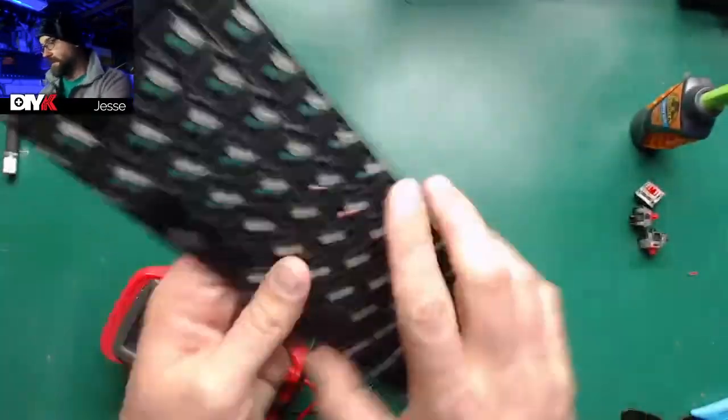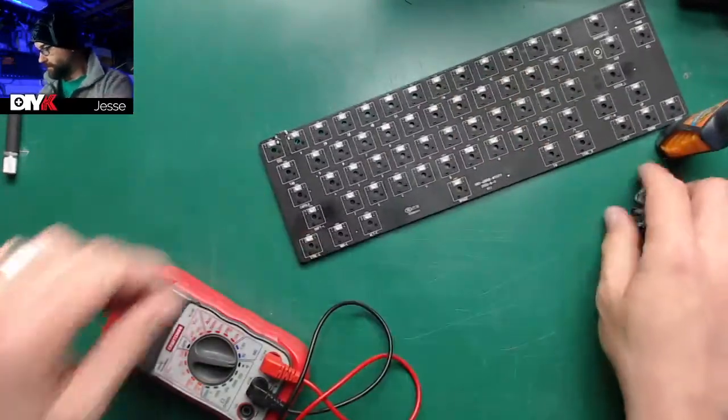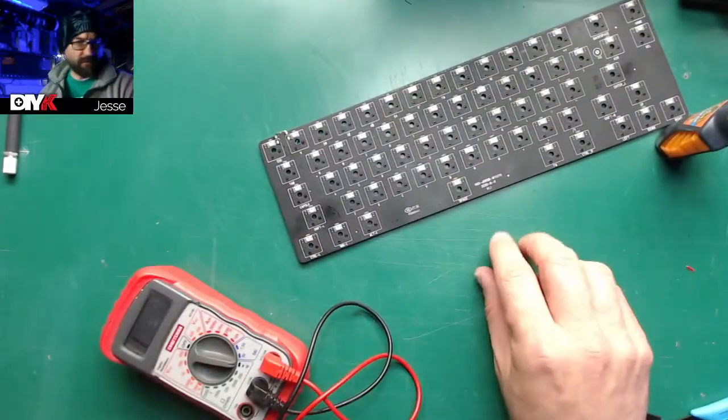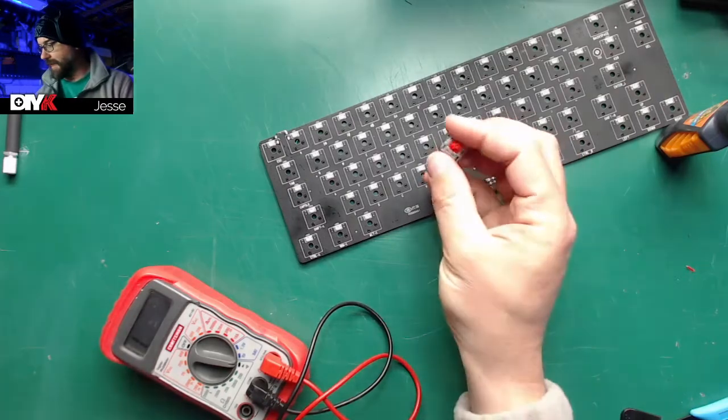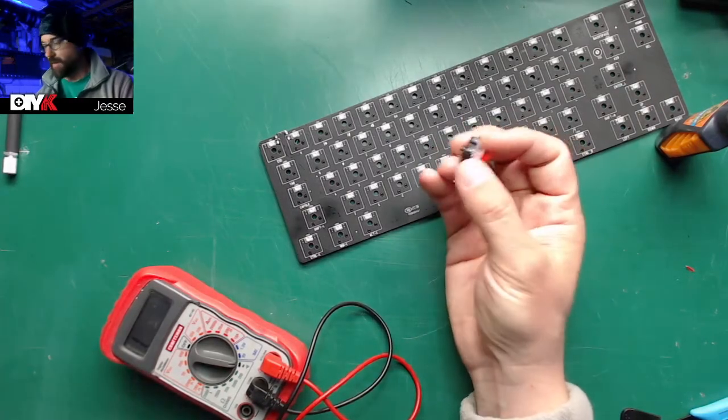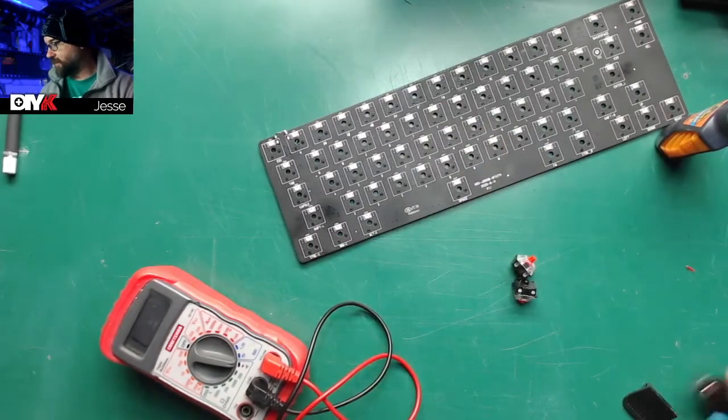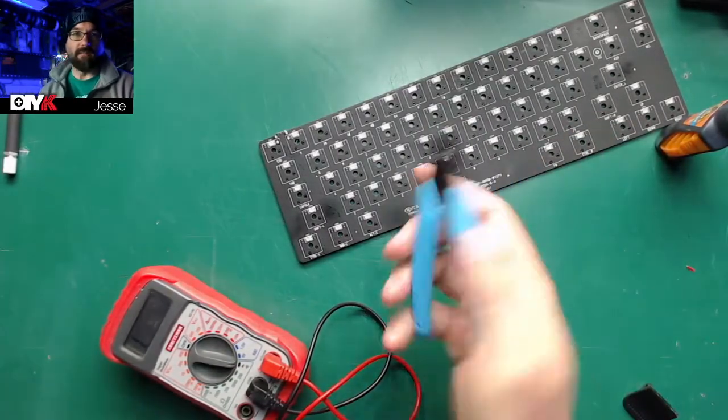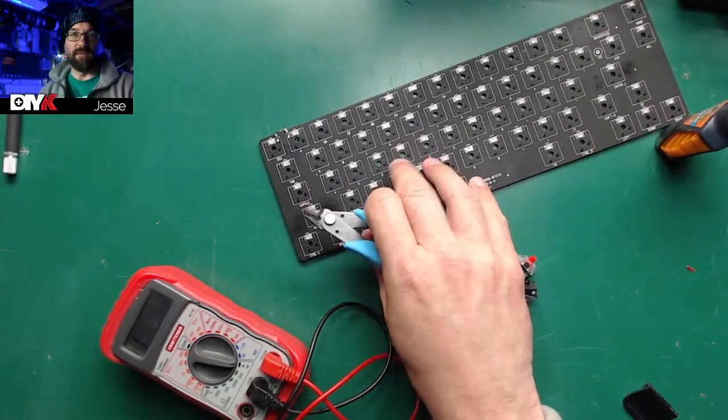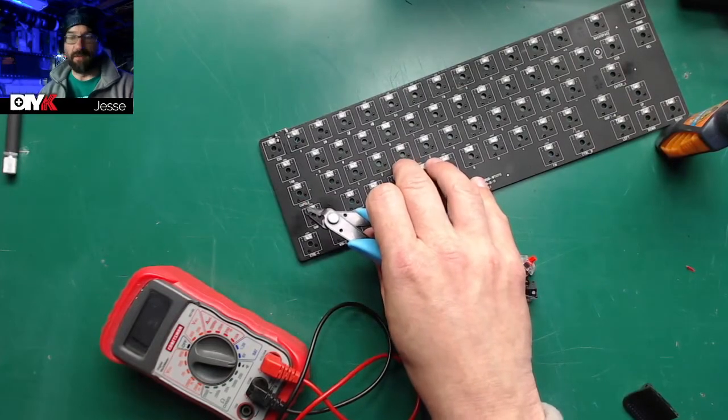Now we just need to add some switches. What I did was I took a few Gateron Reds that I had lying around and trimmed off the legs with a set of flush cutters. The PCB as you can see does not have holes for the 5-pin switches, it only has the center pin hole.